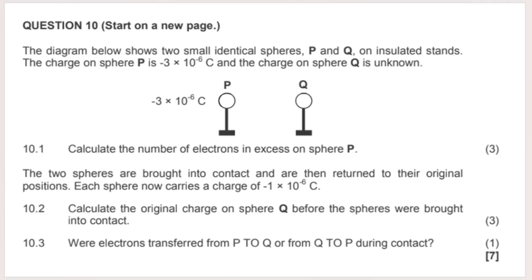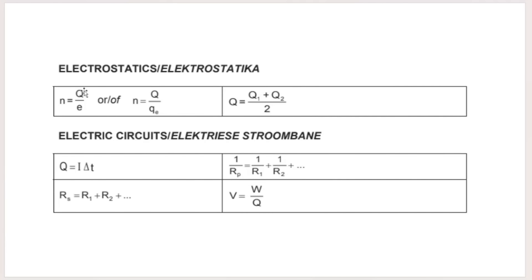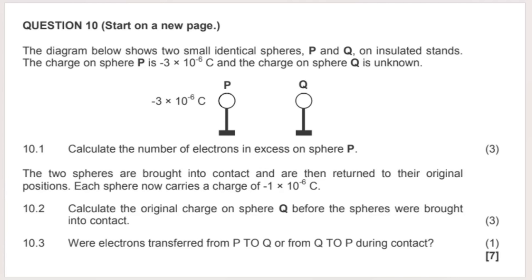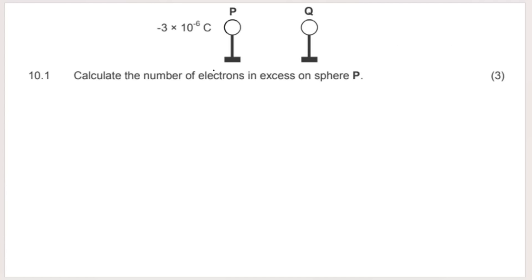Question 10 is electrostatics. We have two spheres P and Q on insulated stands. The charge of P is given as a negative charge; the charge of Q is unknown. We know P has excess electrons because it has a negative charge — electrons are negative, so too many electrons means a negative overall charge. The initial charge of Q is unknown.